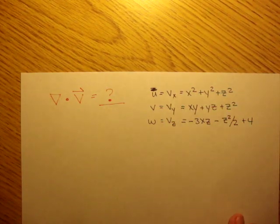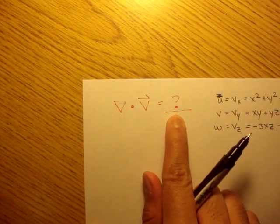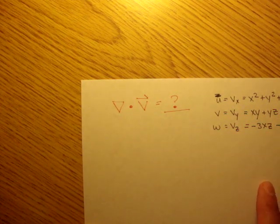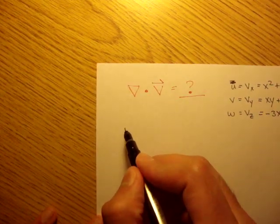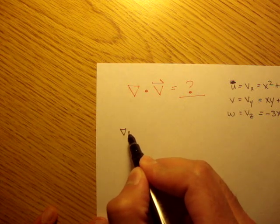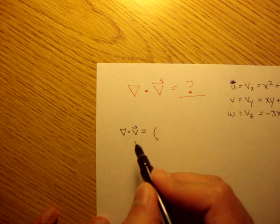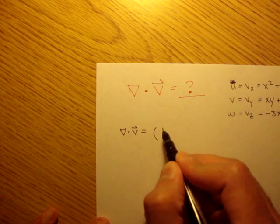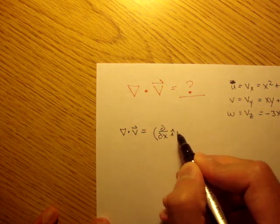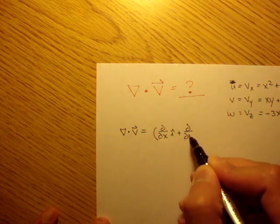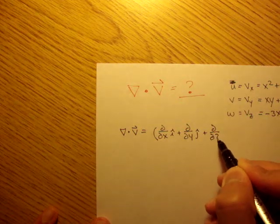And they want to know what del dot v is. They want to know the dilation rate of this flow field. So let's just write that out. Del dot v is equal to, remember, your del operator is your partial in respect to x, i, plus your partial in respect to y, j, plus your partial in respect to z, k.